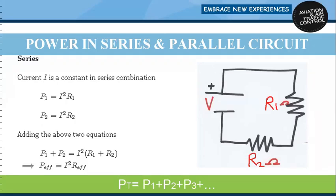We have a voltage source with two resistances R1 and R2 connected in series. In a series circuit, current is the same throughout. Power P1 across R1 equals I squared times R1, and power P2 across R2 equals I squared times R2. Adding them gives I squared times (R1 + R2), which equals I squared times R effective, confirming P effective equals I squared R effective.